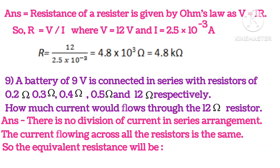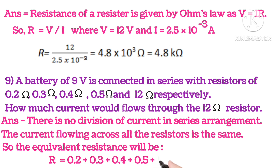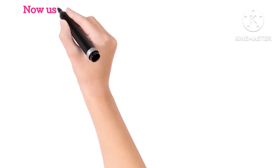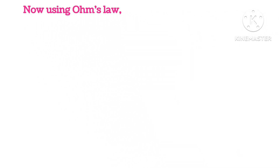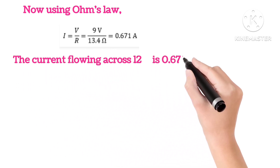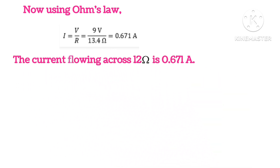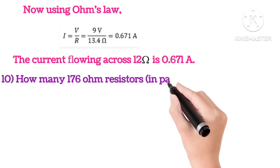So the equivalent resistance will be R equals 0.5 plus 0.3 plus 0.4 plus 0.5 plus 12, that is 13.4 ohms. Now, using Ohm's law, I equals V upon R. Putting in the values, we get 0.678 amperes. So the current flowing across the 12 ohm resistor is 0.671 amperes.